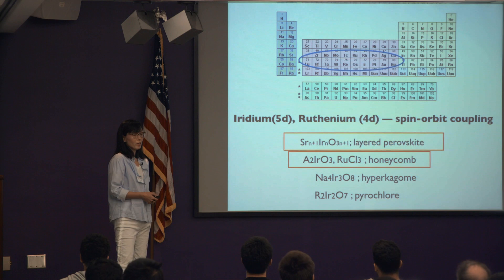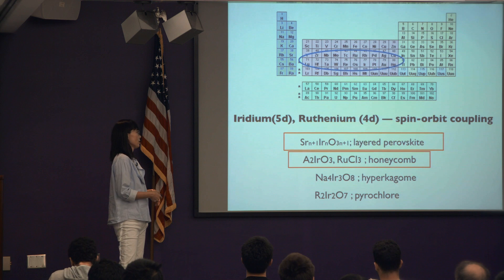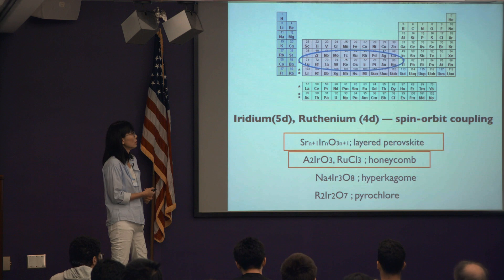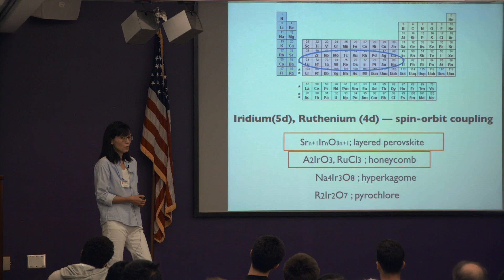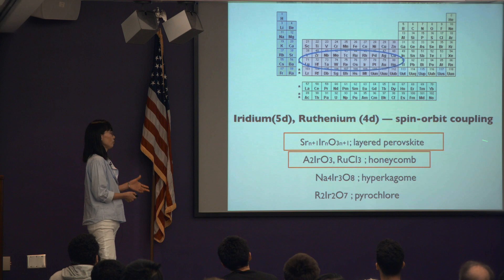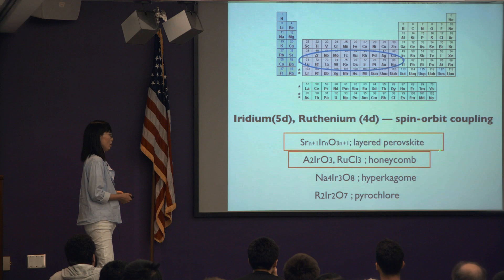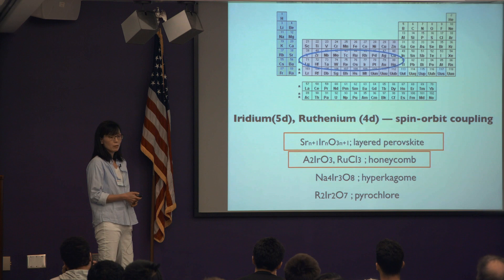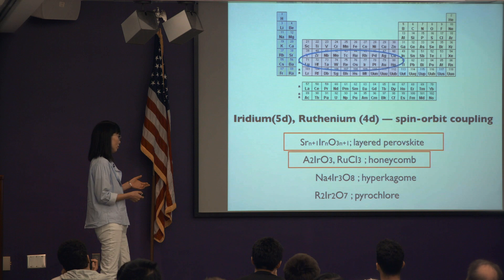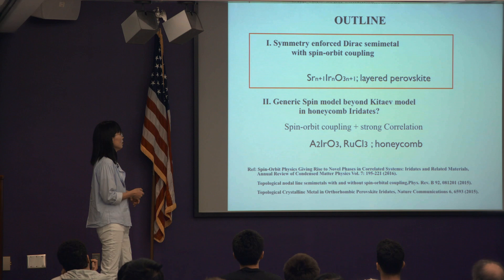Where is this applicable? For systems with strong spin-orbit coupling as well as Coulomb interactions, the physics is mainly applicable in transition metals where electron-electron interactions are important. We'll be looking at 4D or 5D systems where spin-orbit coupling is significant because of heavier atoms. The first lecture will be mainly on layered perovskites with nice topological band structures, and the second lecture will focus on honeycomb iridates or ruthenates, where Kitaev interactions and other interactions show up.